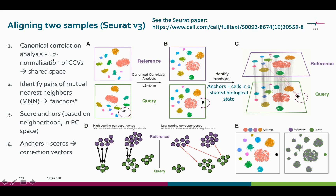After CCA, the canonical correlation vectors are normalized. After these two steps, we have projected the dataset into a subspace which is defined by the shared correlation structures of the datasets. Now, in this shared space, anchors are identified. These anchors, represented here as gray lines, are cell pairs that share mutual nearest neighbors across the datasets.